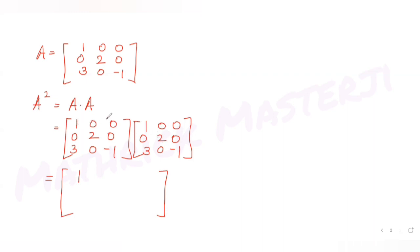Continuing the multiplication: first row gives 1, 0, 0. For the second row: 0 into 1 plus 2 into 0 plus 0 gives 0; 0 into 0 plus 2 into 2 plus 0 gives 4; 0 into 0 plus 2 into 0 plus 0 gives 0. So the second row is 0, 4, 0.